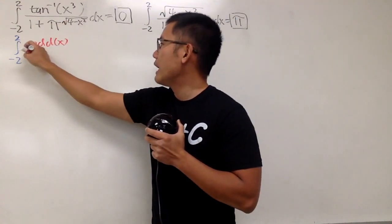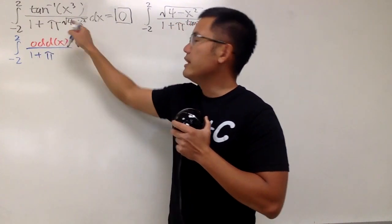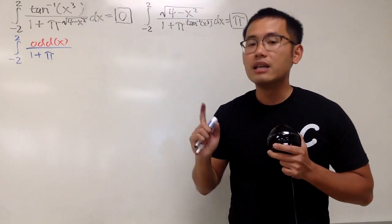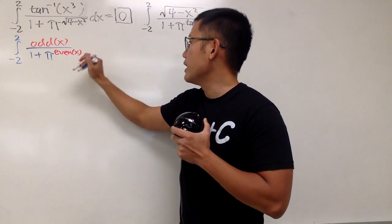And on the bottom here, we have this over 1 plus pi. And this right here, square root of 4 minus x squared, is in fact even. So I will just put down, we have an even function here for the exponent.